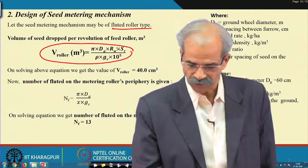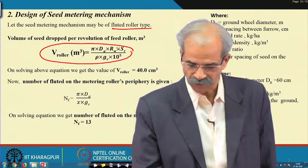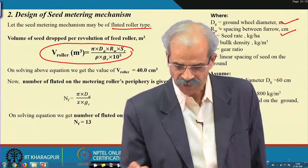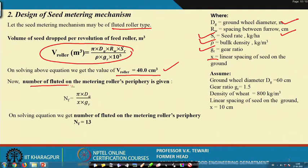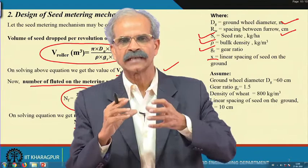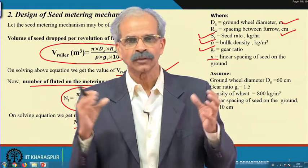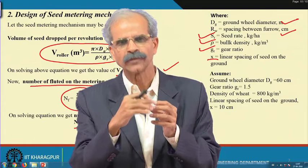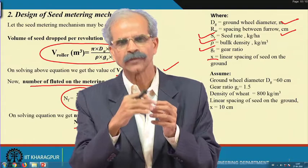Here x is the linear spacing of seed on the ground. Solving the equation, V_roller comes to about 40 cm³. The number of flutes on the roller periphery is calculated from the known ratio and desired spacing; solving gives nf equal to 13. Flute counts typically vary from 8 to 13, and we have obtained 13 here. The key design angle works out to 27.69 degrees, and these detail values are taken from literature and previous design discussions.